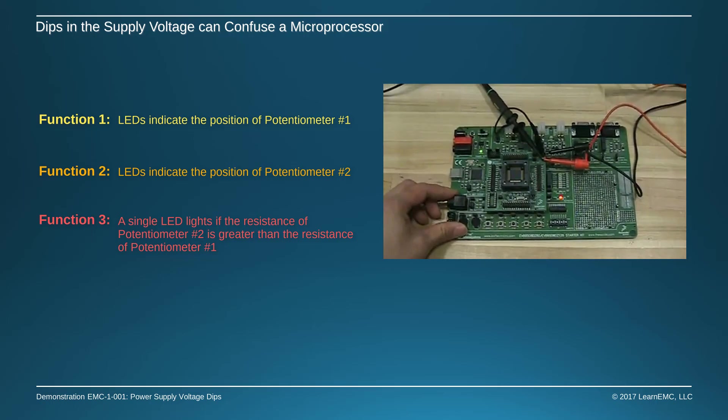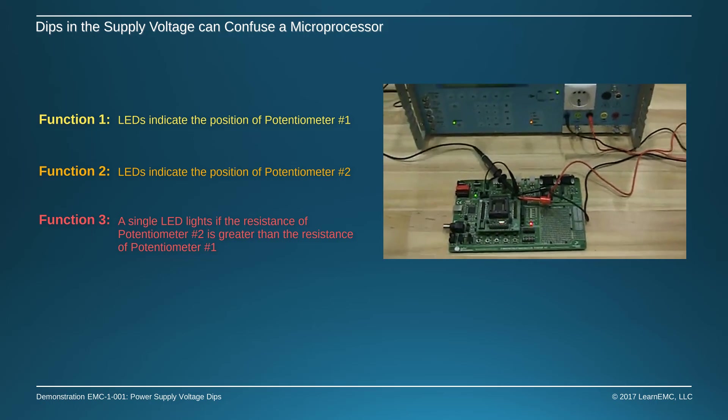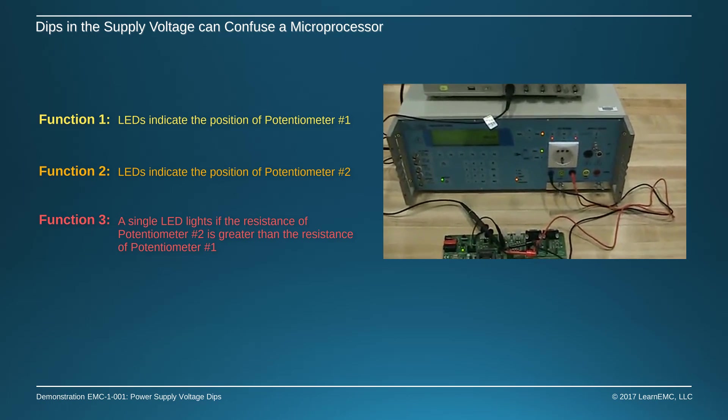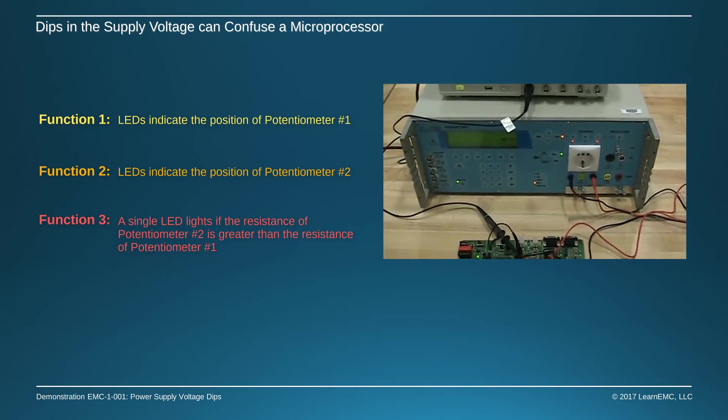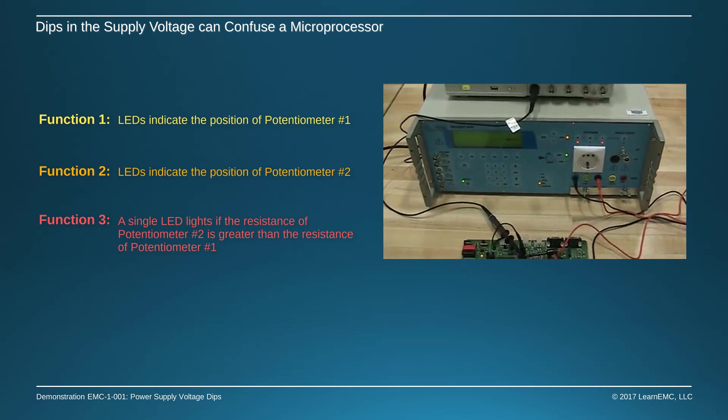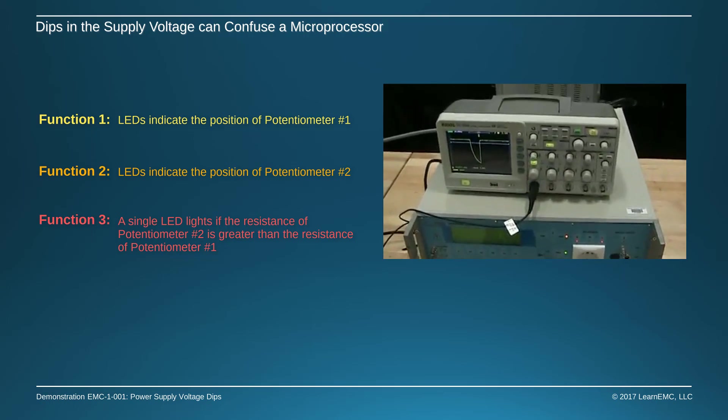We have the ability to drop the supply voltage to zero momentarily, simulating a brief short or a power dip due to load switching. The DC voltage that powers this board is supplied through a transient test system, and the supply voltage is monitored on an oscilloscope.